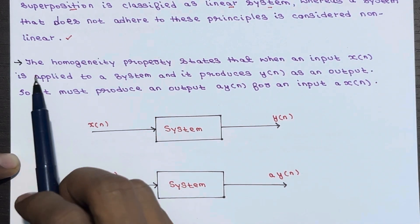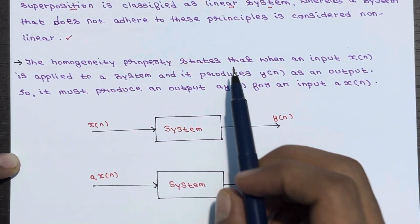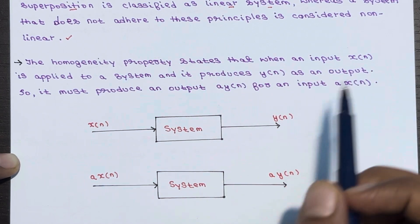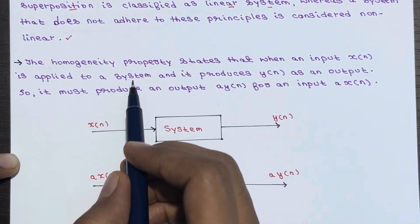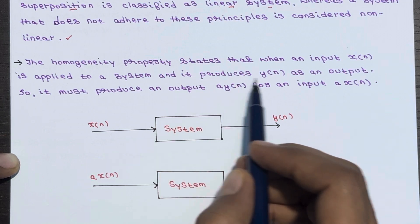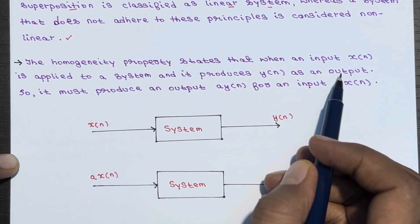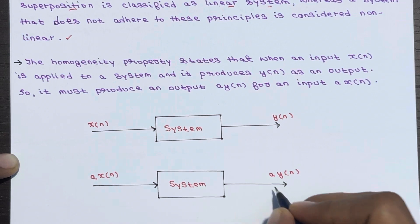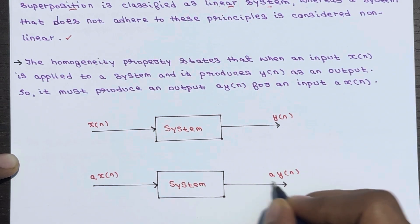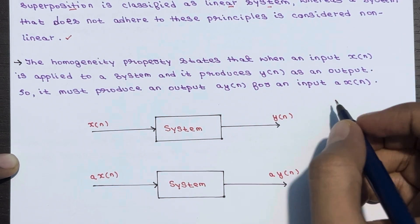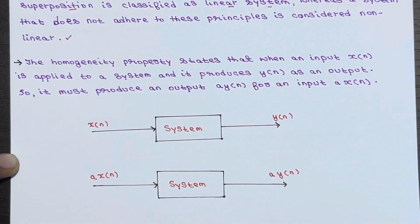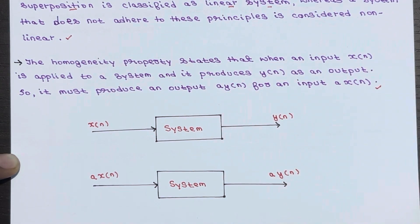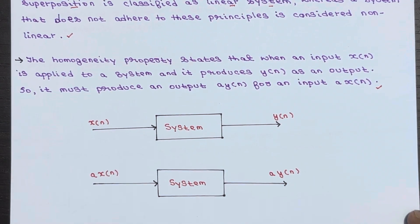The homogeneity property states that when an input x(n) is supplied to a system and it produces y(n) as an output, it must produce a·y(n) as output for an input a·x(n). This is what the homogeneity property states.